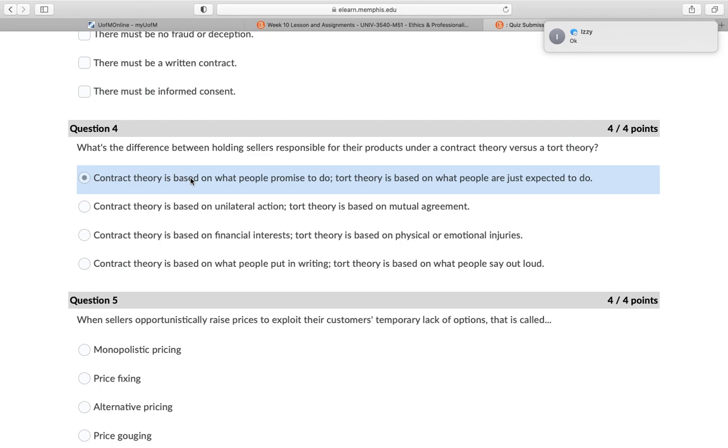It says that the distinction between contract law and tort law calls attention to two different ways to understand ethical duties. Under a contract model, the only duties that a person owes are those that have been explicitly promised to another party.